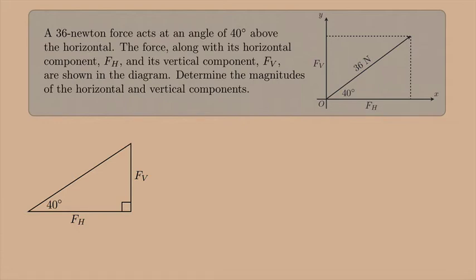I also have 36 Newtons for the hypotenuse of my triangle. And now I can use SOHCAHTOA to find the horizontal and vertical components.